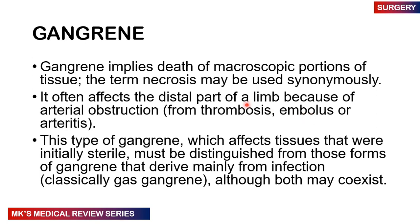Gangrene can affect the distal parts of the limb because of arterial occlusion. Mostly the arteries are blocked and there's not enough blood flow going to the area, so the cells begin to die because they're not receiving oxygen or nutrients. This blockage can arise as a result of thrombi, emboli, or vascular diseases such as arteritis. This type of gangrene, which affects initially sterile tissues, must be distinguished from gangrene where infection is present, as in gas gangrene, though they can coexist.